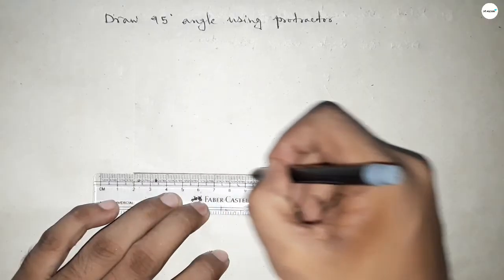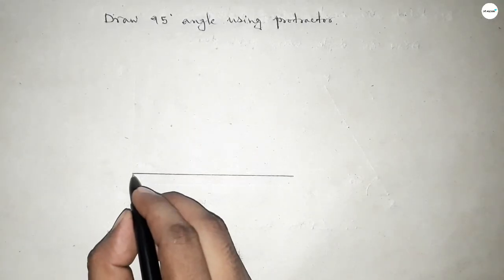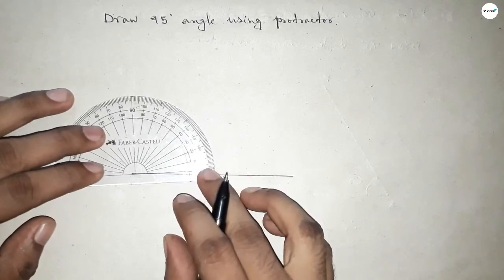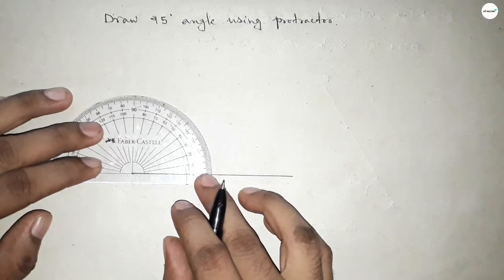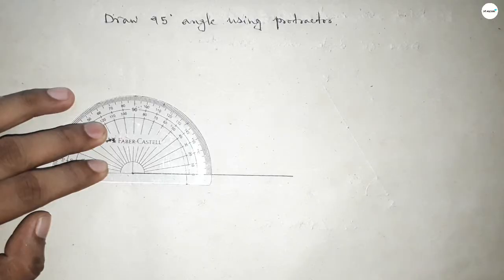First of all, we have to draw a line of any length. Now marking a point here. Now using protractor, first putting the protractor on the line perfectly. Now counting the angle.